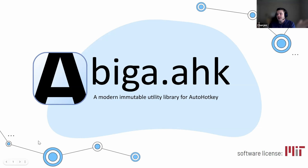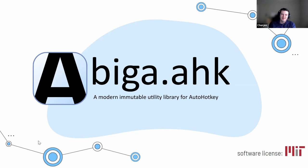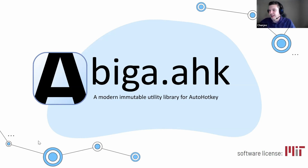So bigA.autohotkey — it's a modern immutable utility library for AutoHotKey. A lot of meaning packed into that little sentence. Immutable is another programming paradigm where instead of changing your variable all the time, you just make a new version, so you can use that old object if you need it later.